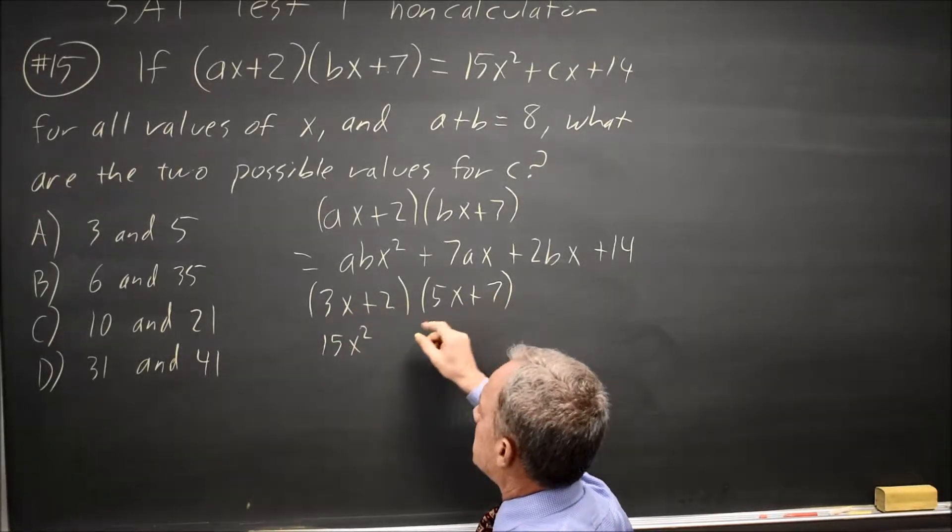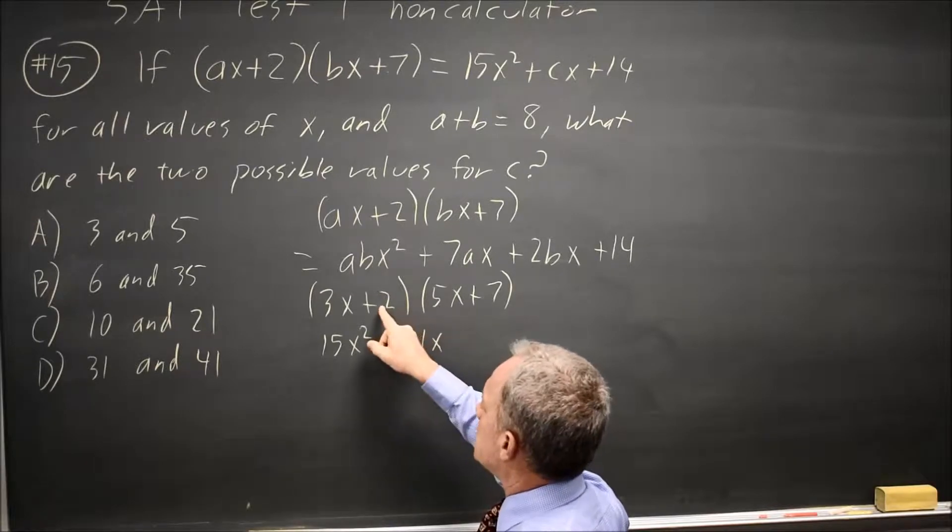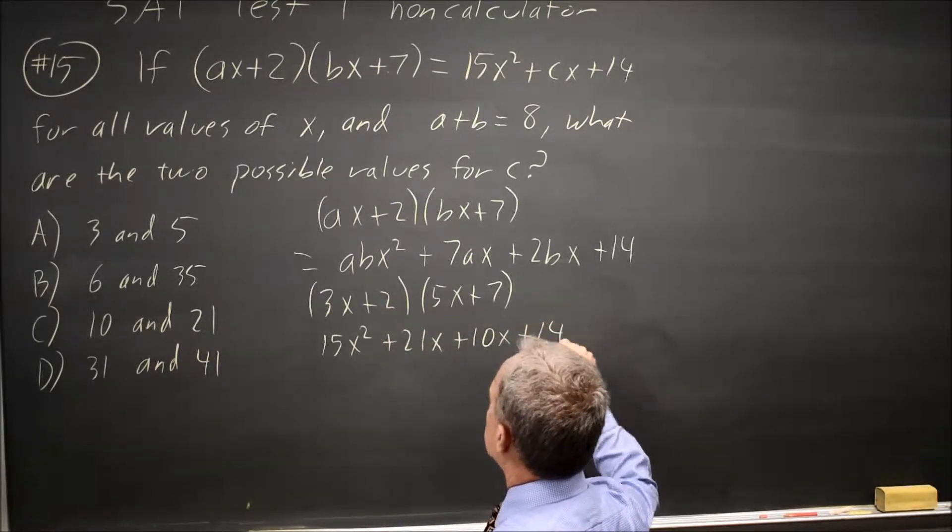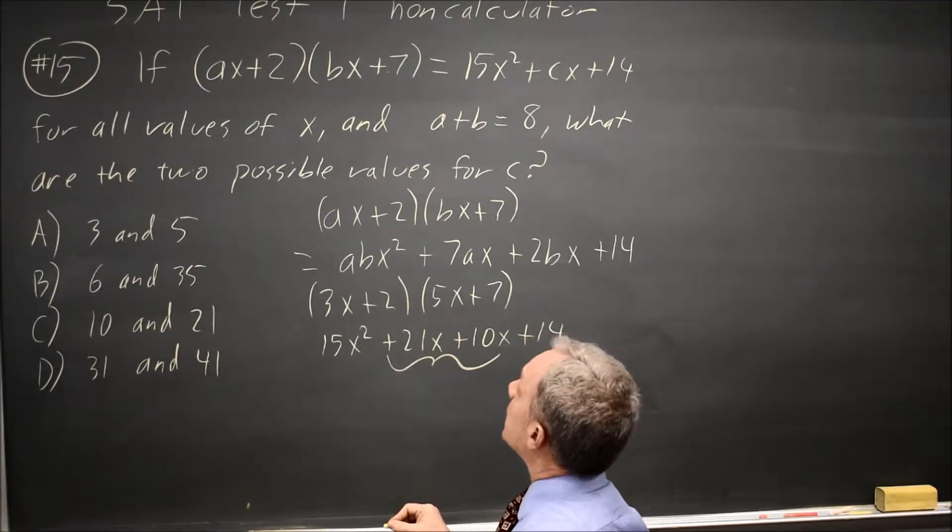Outside times outside, 3X times 7 is 21X. Inside, 2 times 5X is 10X plus 14.